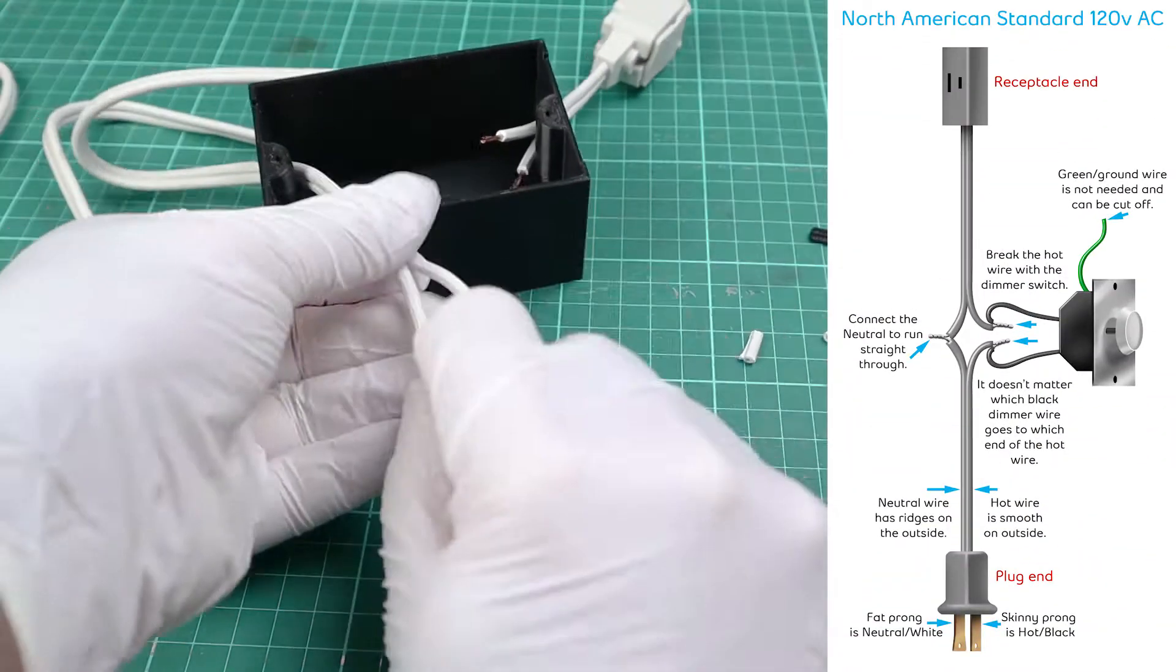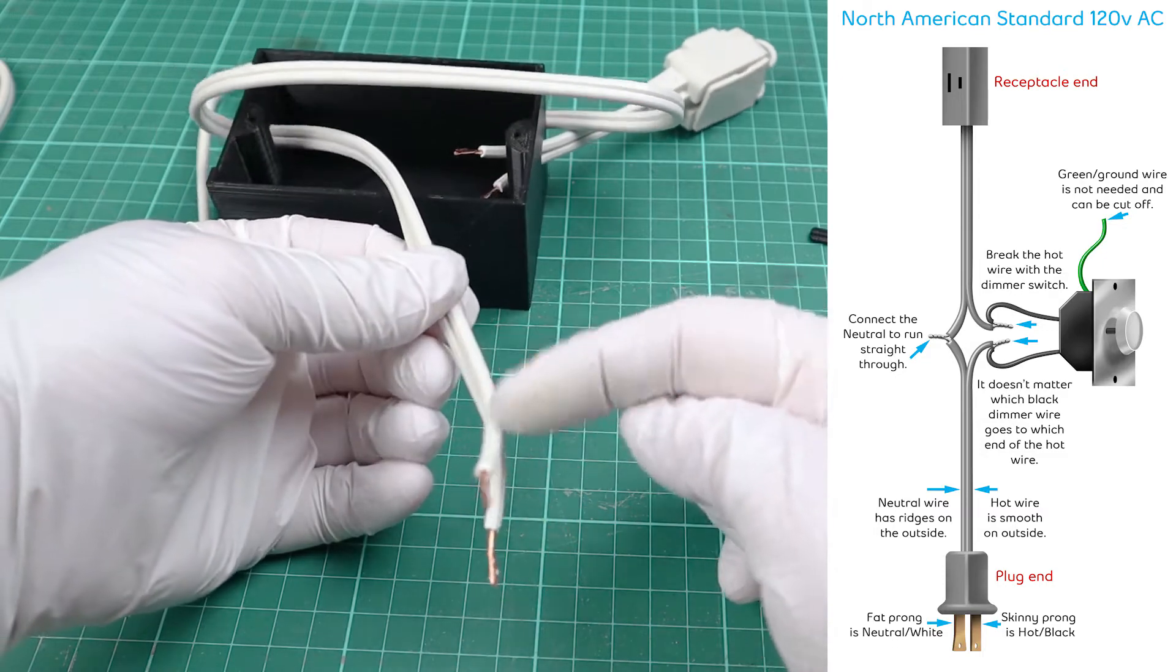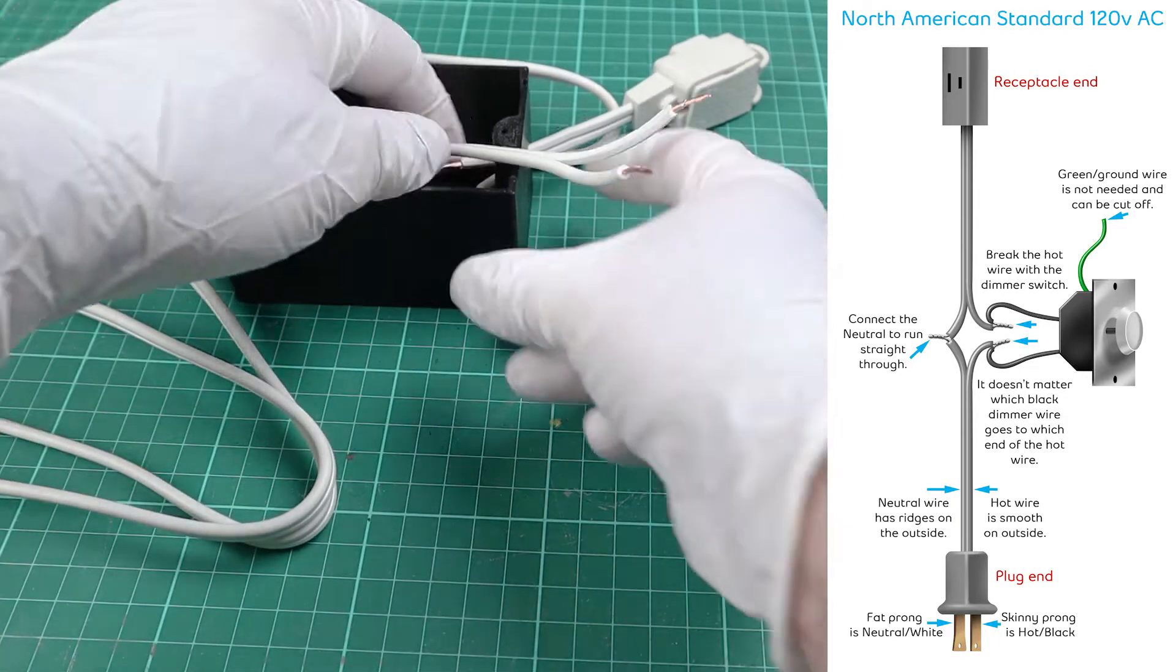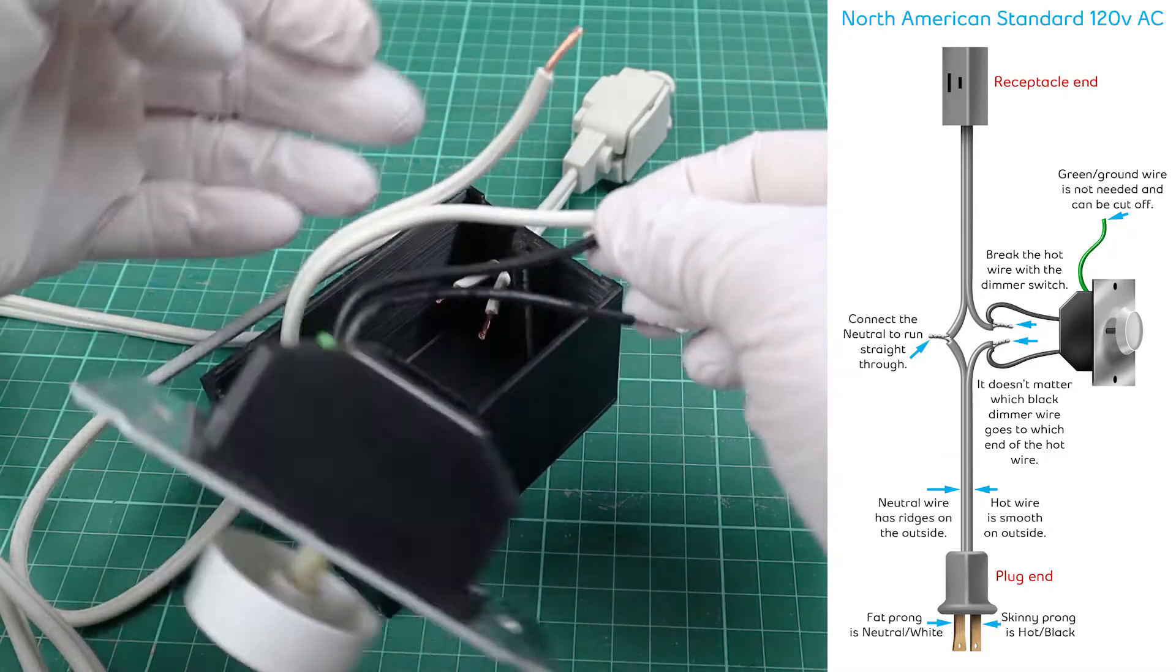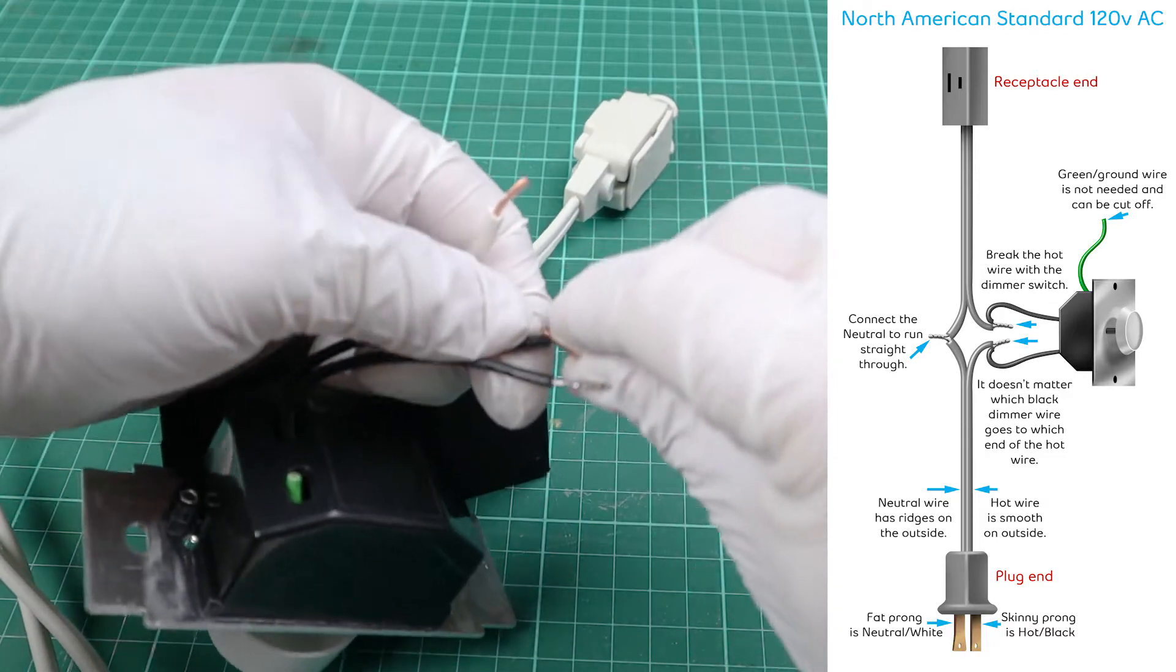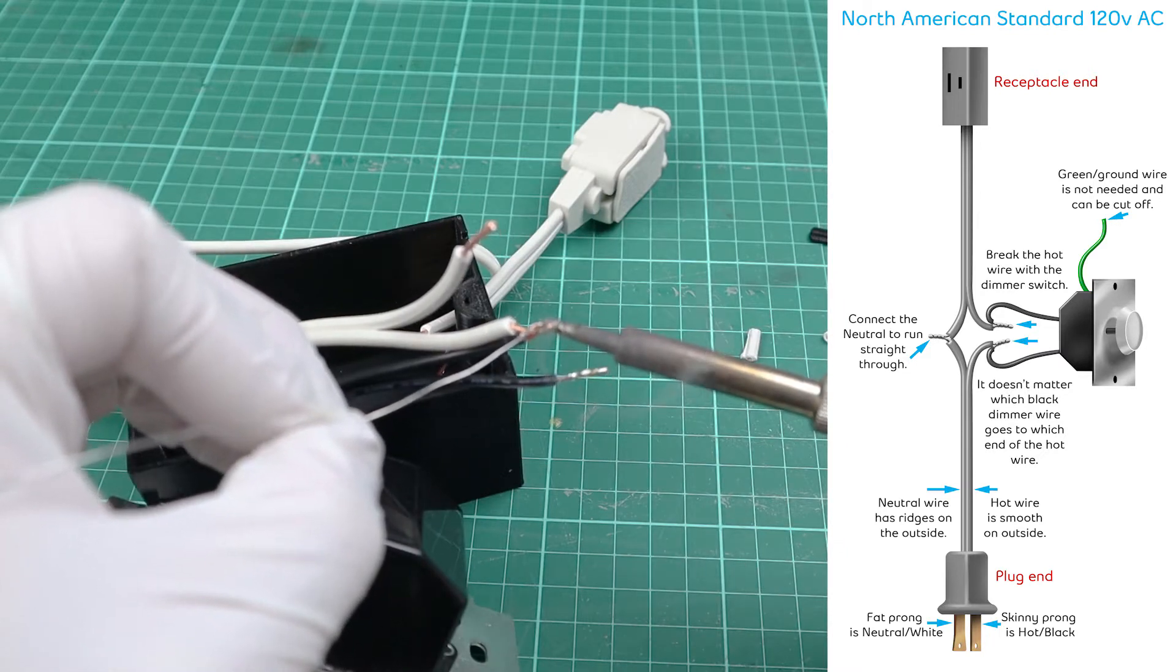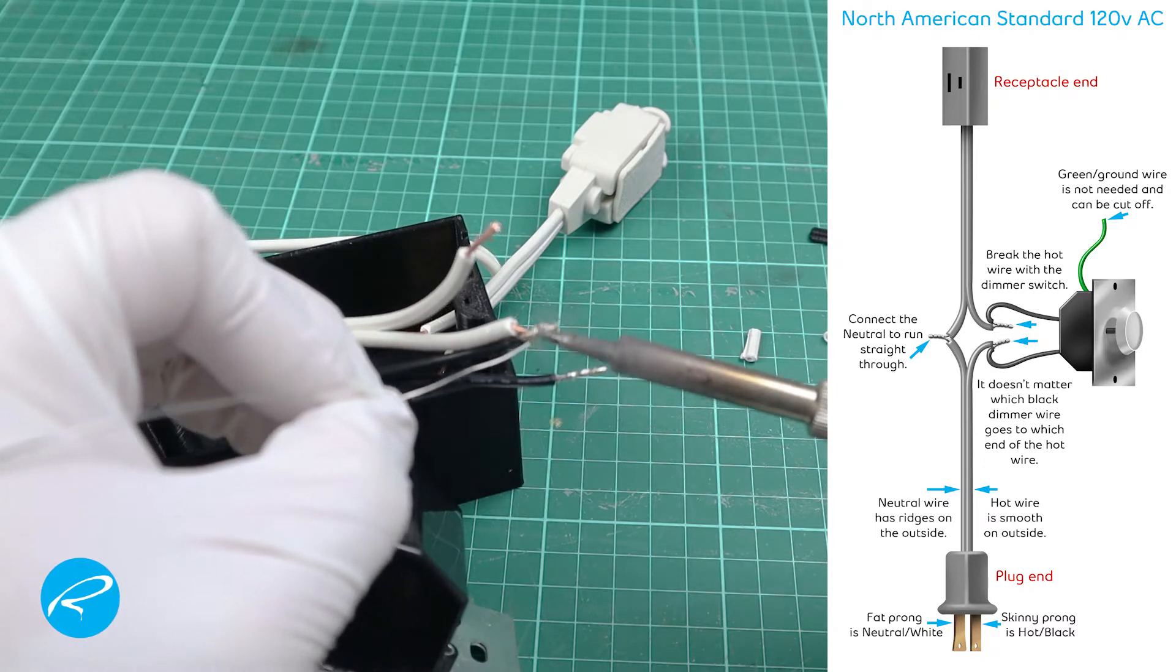I've included a wiring diagram here. Important things to know, the fat prong on a two-prong cord is going to be the neutral, and the skinny prong is going to be the hot or black wire. Also, the neutral wire has little ribs on the outside of it, where the hot wire is completely smooth. It is the neutral wire that we want to connect continuously from the plug to the receptacle, and the hot wire is the one that we want to break with the dimmer switch.